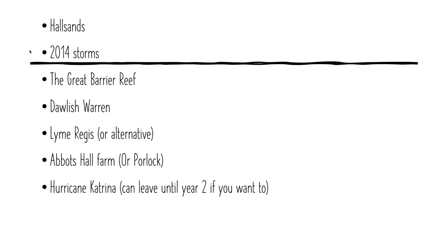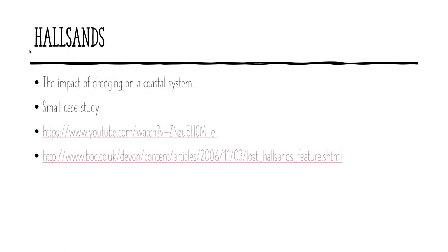Holt Sands came up quite early on in the module when we were talking about factors affecting the rate of erosion, which you then did as a 15 mark question. One of the factors that can affect the rate of erosion is whether there has been dredging — humans removing sediment from the sea floor — which causes chaos in coastal systems. It's not a particularly big case study, and I've put a couple of links in the PowerPoint.